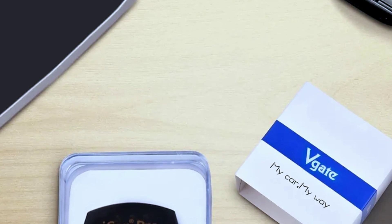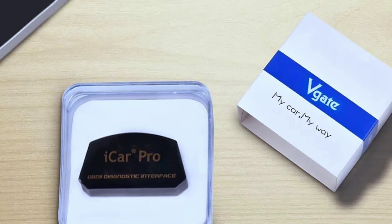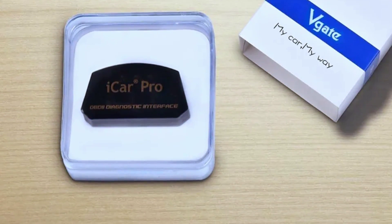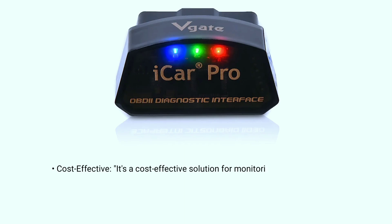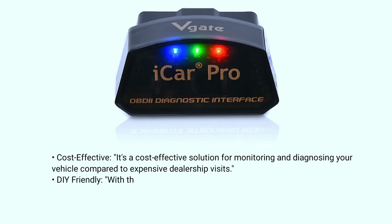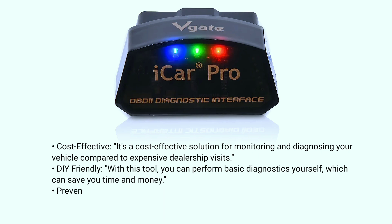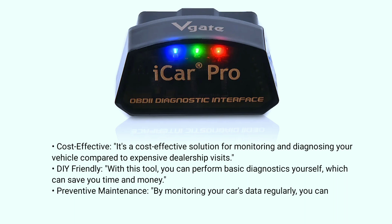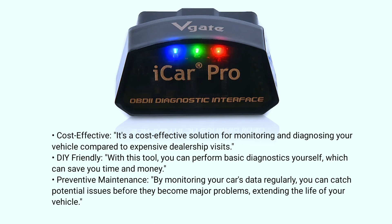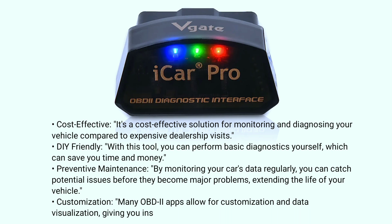So why should you consider using the Vagate eCar Pro Bluetooth 4.0 for your car's diagnostics needs? Cost-effective: it's a cost-effective solution for monitoring and diagnosing your vehicle compared to expensive dealership visits. DIY-friendly: with this tool you can perform basic diagnostics yourself, which can save you time and money. Preventive maintenance: by monitoring your car's data regularly, you can catch potential issues before they become major problems, extending the life of your vehicle. Customization: many OBD-II apps allow for customization and data visualization, giving you insights tailored to your preferences.